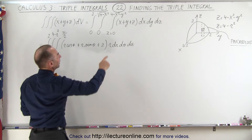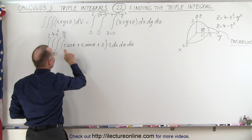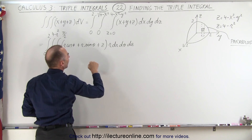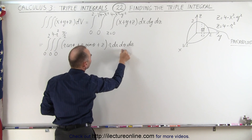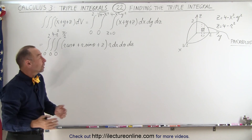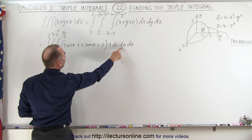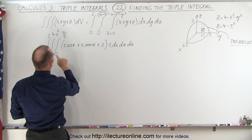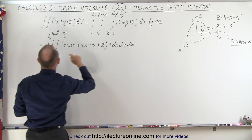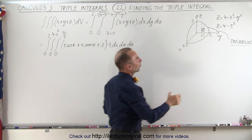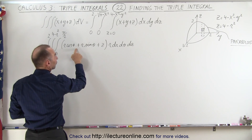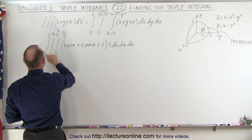Converting to cylindrical coordinates: x becomes r times cosine of theta, y becomes r times sine of theta, and z stays the same. The volume element becomes r dr dθ dz instead of dx dy dz. The limits also change — for the angle theta it's only a quarter circle, so from zero to pi over two. For z, we integrate from zero to 4 minus r squared, using the paraboloid equation in cylindrical coordinates. For r, the limit is from zero to two.